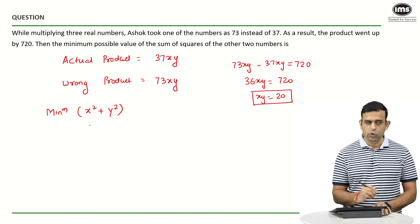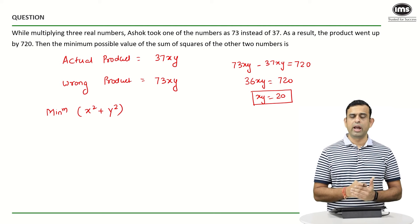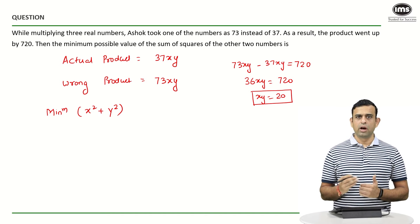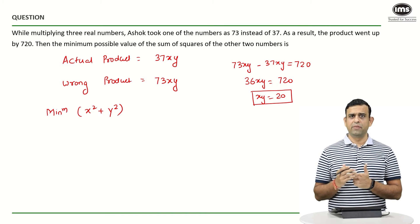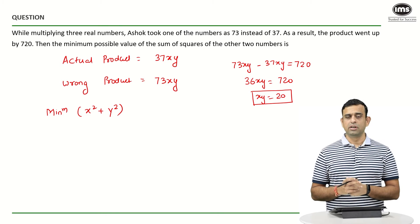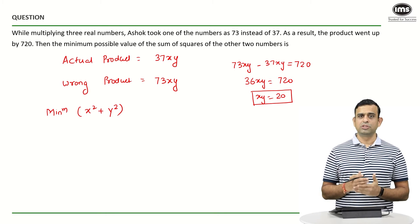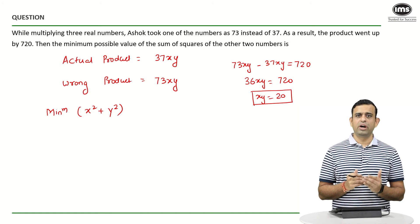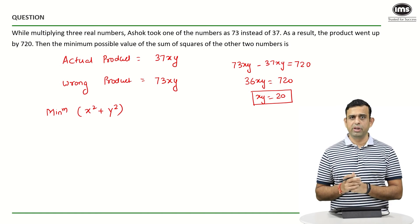That means I have to minimize the sum of x² and y². Now you know that whenever the product is constant and if I have to find out the minimum possible sum, I am definitely going to apply the concept of arithmetic mean more than equal to geometric mean.